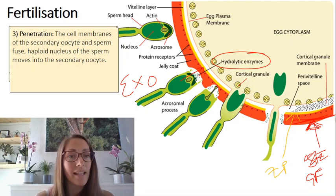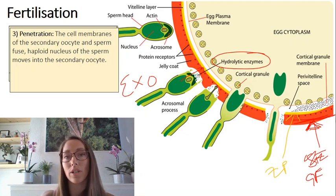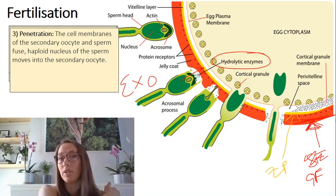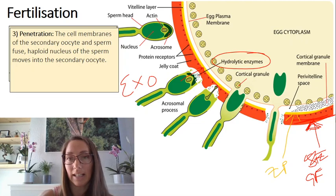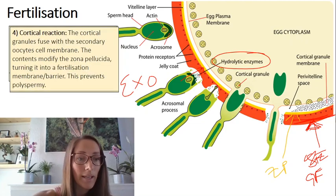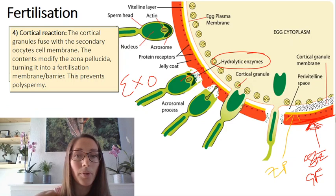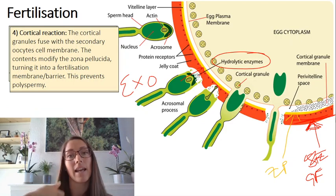Penetration is the next stage. This is where the cell membrane of the secondary oocyte and sperm fuse, and the haploid nucleus of the sperm moves into the secondary oocyte's haploid nucleus.